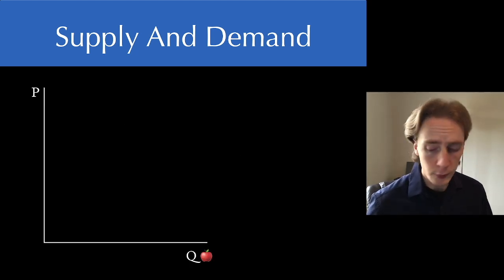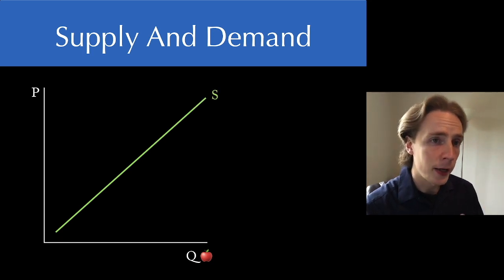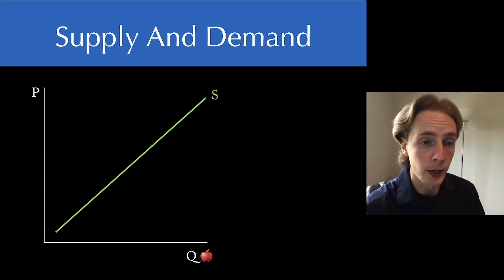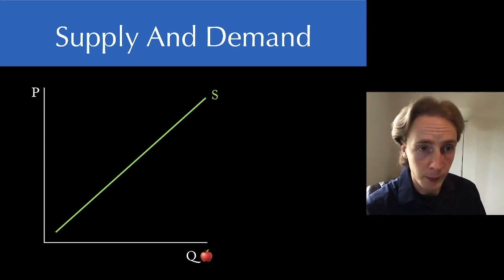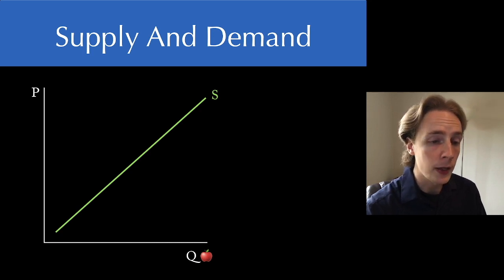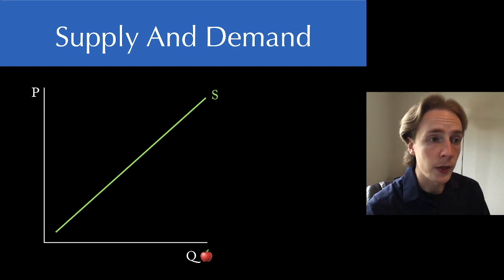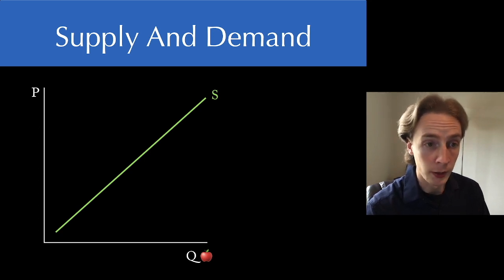So let's do that. First of all, we have our supply curve that slopes upward. That's our law of supply. The higher the willingness to pay for something, the higher the quantity that you're willing to provide. In other words, the more that you incentivize something, the more people are willing to do.